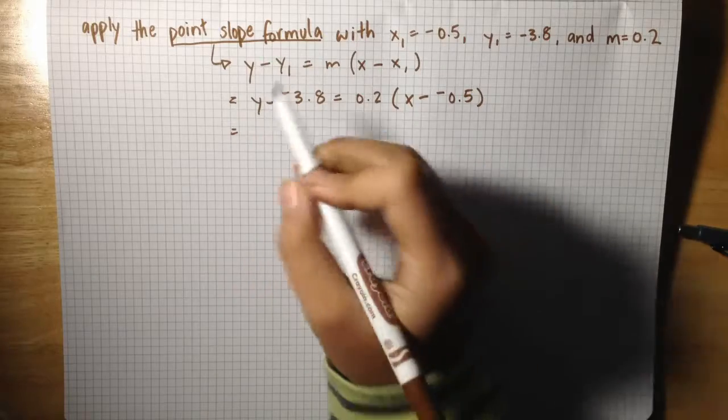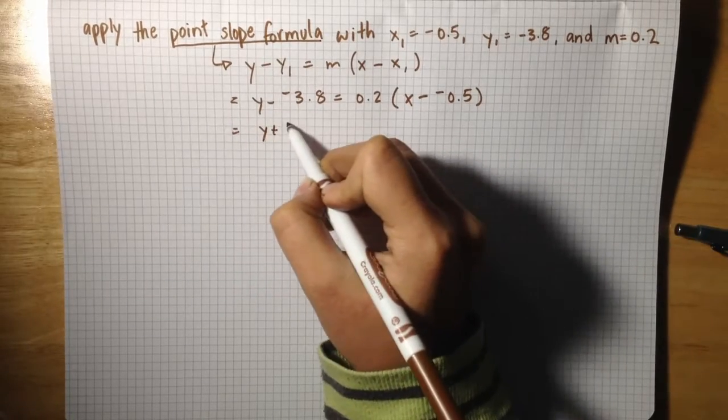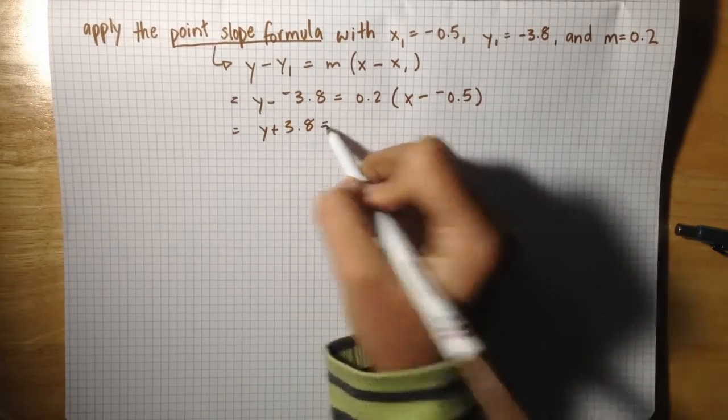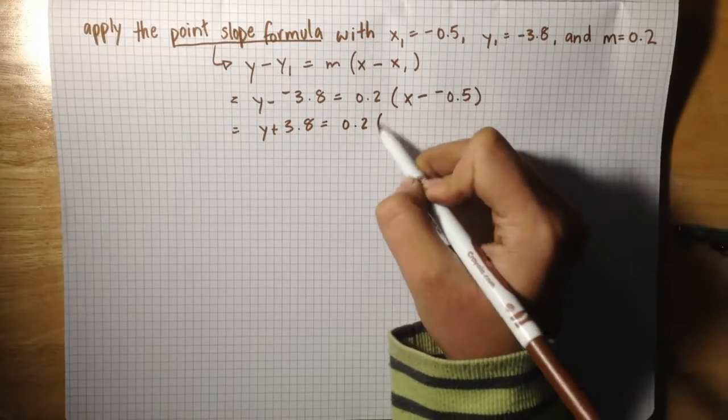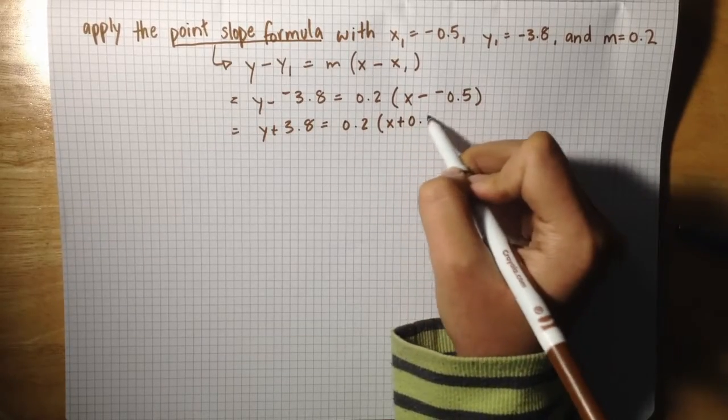Minusing a negative equals adding, so y plus 3.8 equals 0.2 times x plus 0.5.